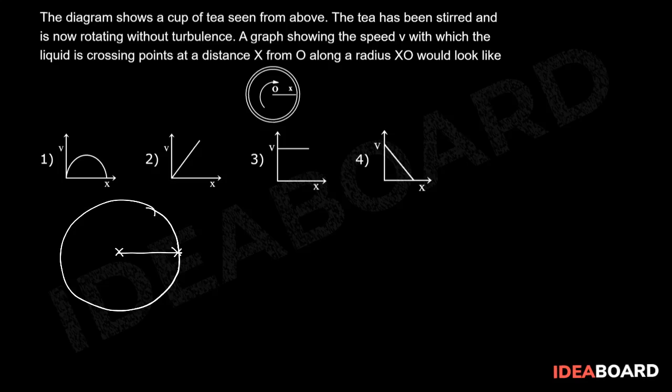As we move from the center of the cup, point O, along the x-axis, the speed of the liquid crossing the line decreases from velocity v to 0. The velocity of liquid is maximum at the center of the cup, which is capital V.